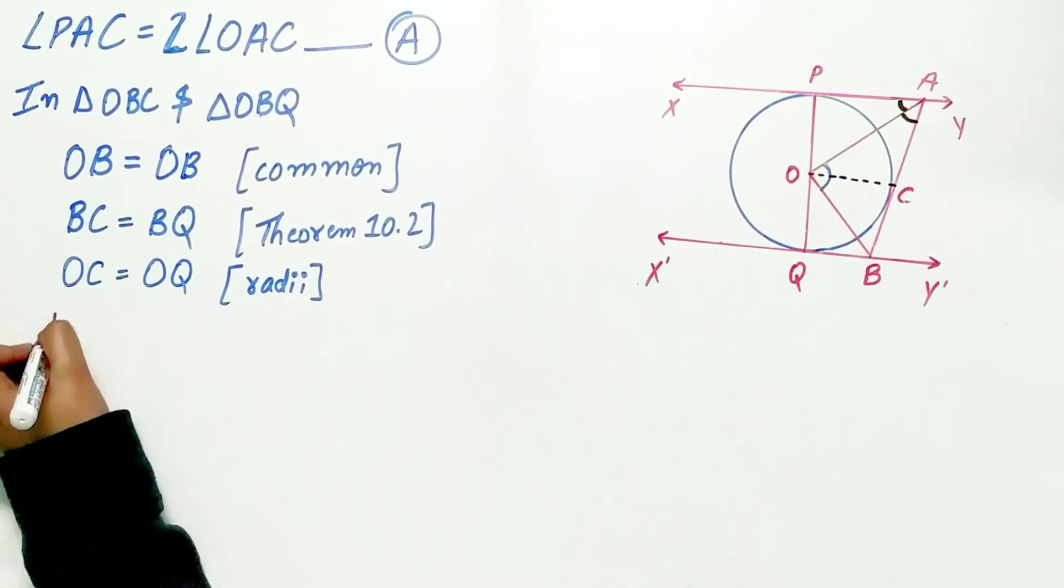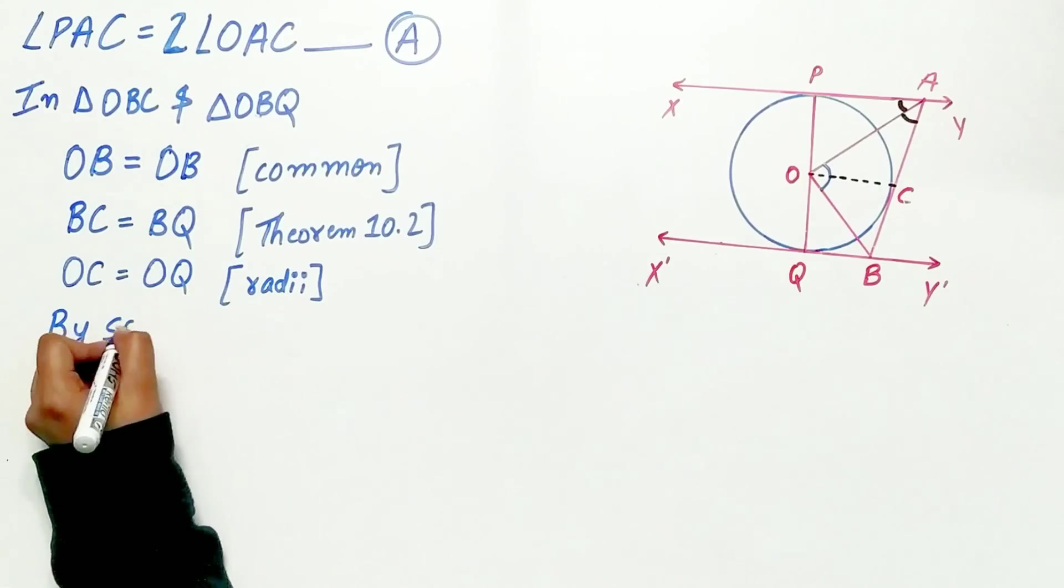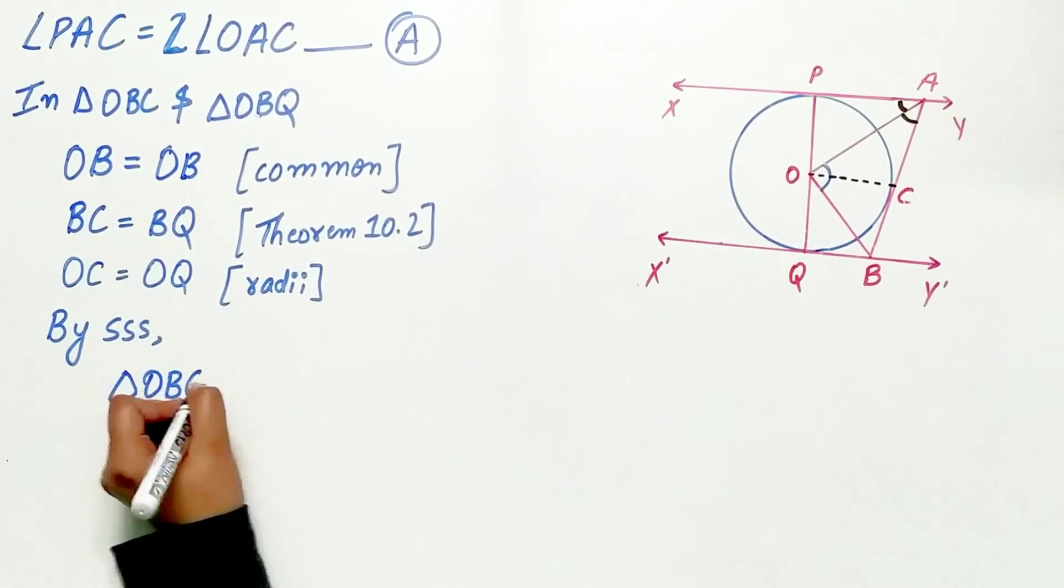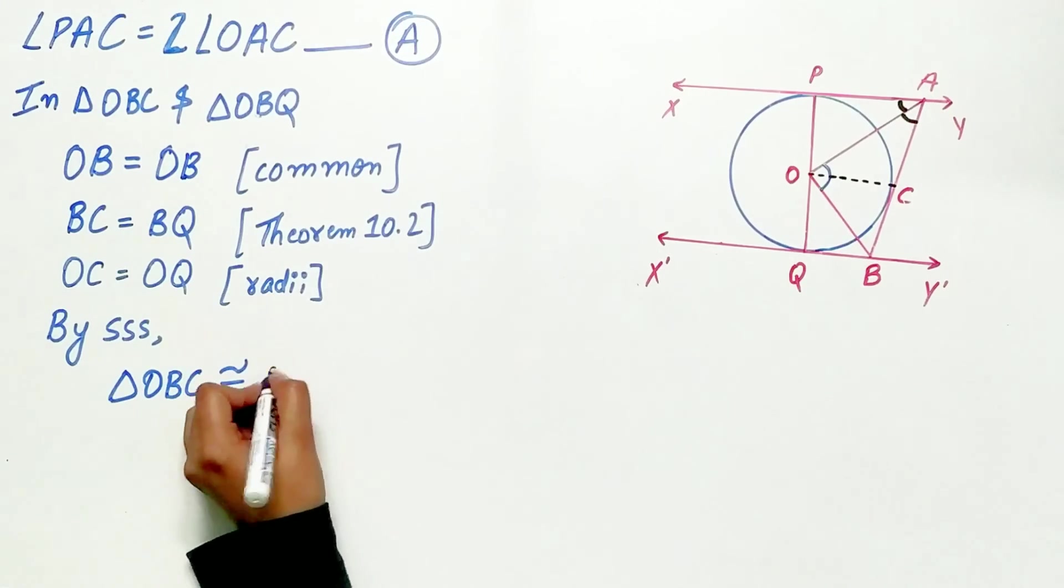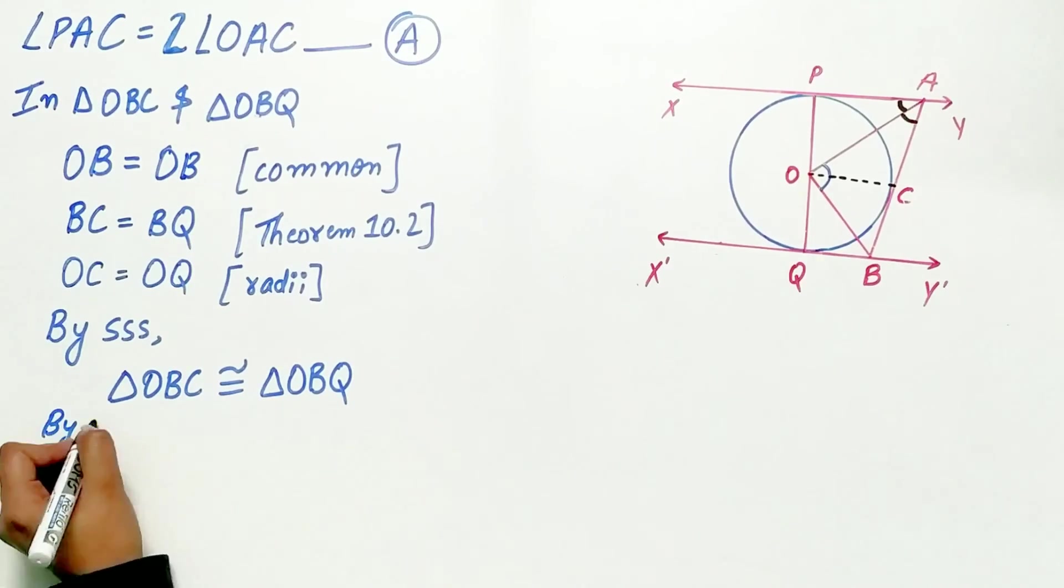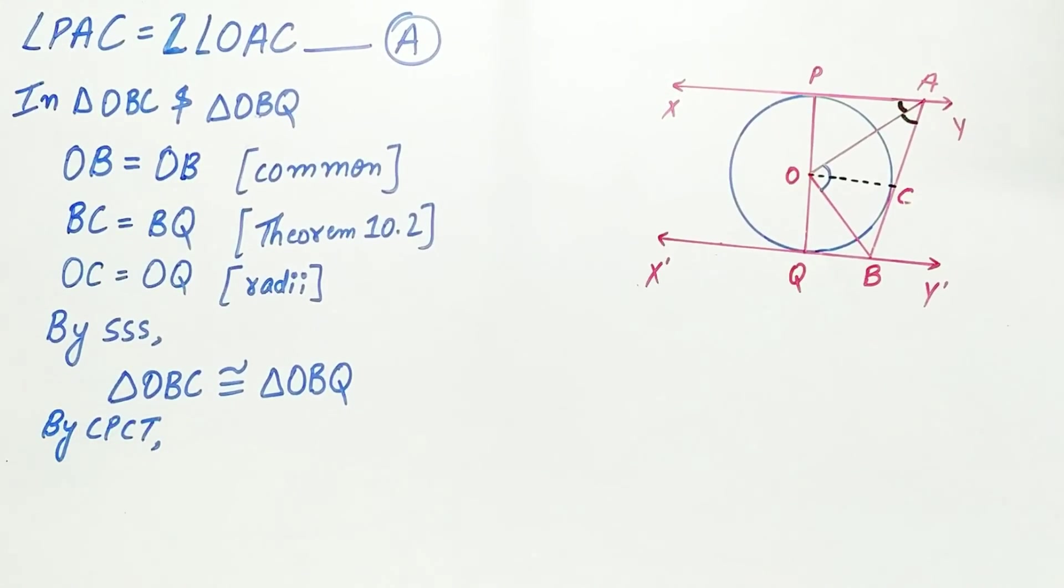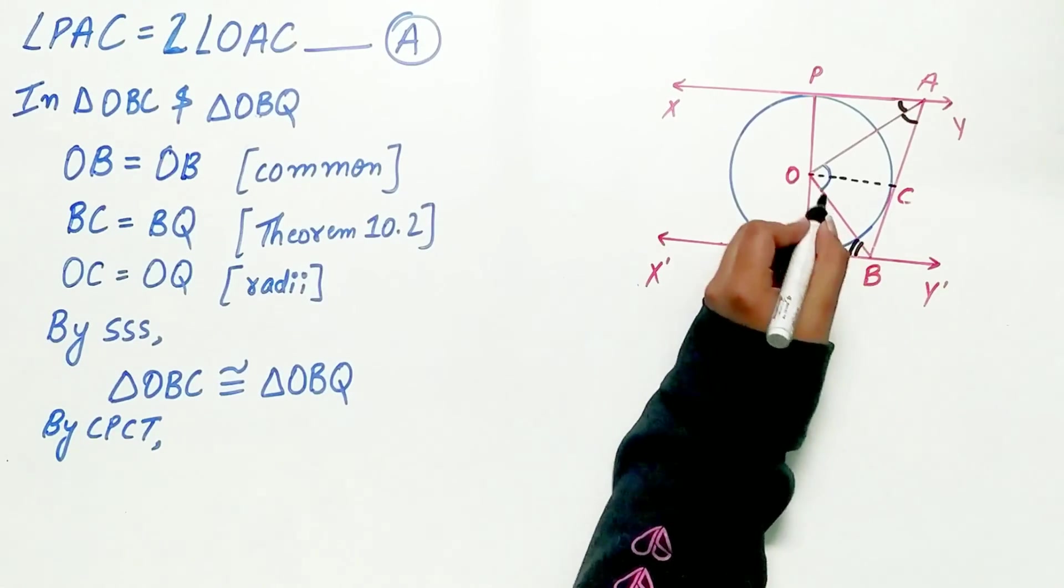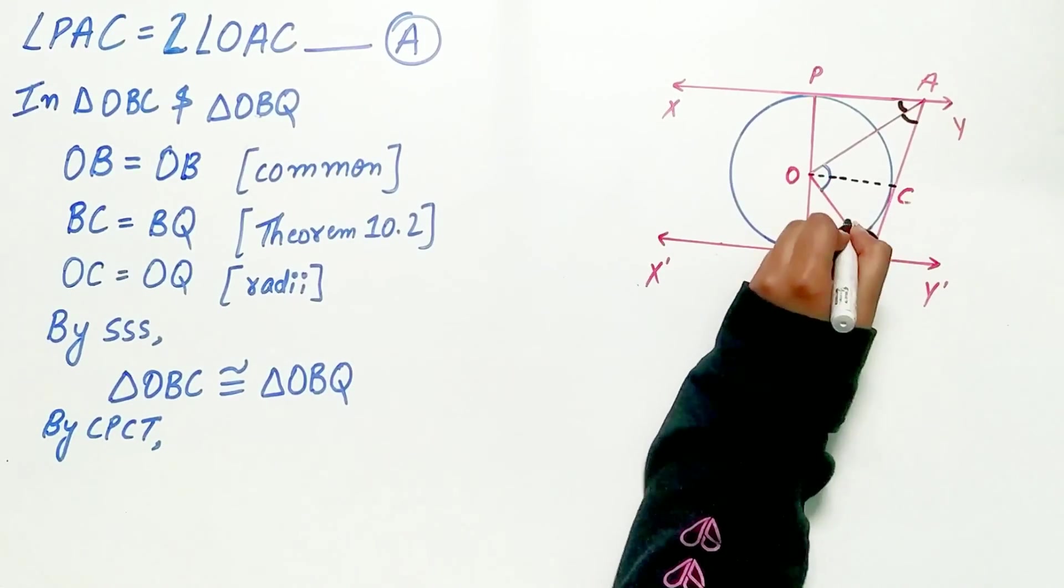So by SSS, triangle OBC is congruent to triangle OBQ. And by CPCT, angle OBQ is equal to angle OBC.